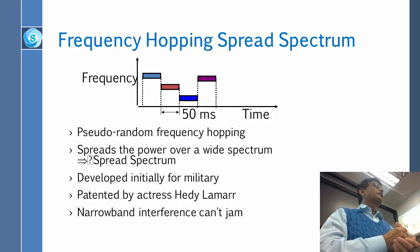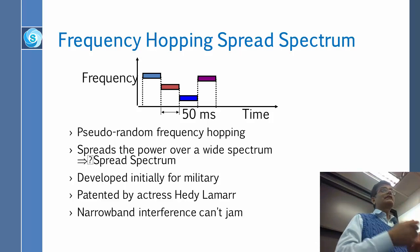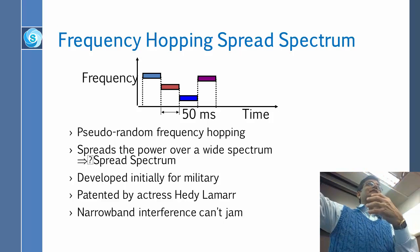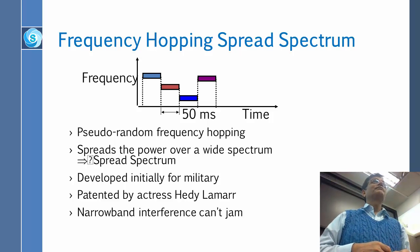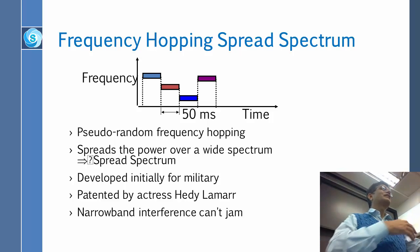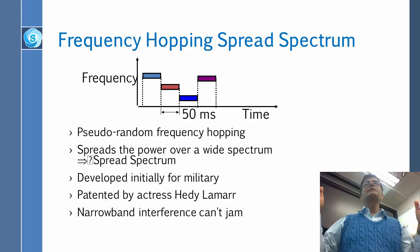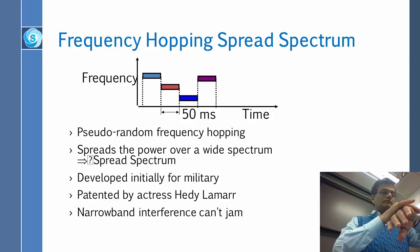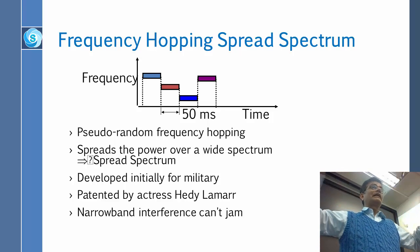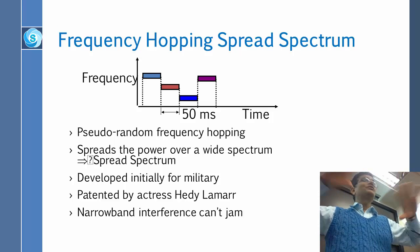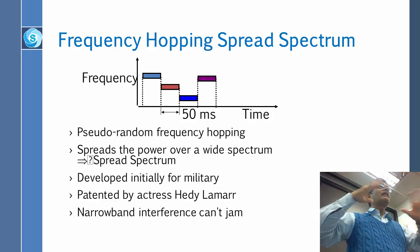This random number generator is your code. In the random number generator, you put a seed and the next number comes out; you put that and you get the next number. The seed is your code. If you put a different seed, you get a different sequence; I put a different seed, I get a different sequence. So basically, we all have a different code — that means a different seed — but we all know the same random number generator. Therefore, we can all talk at the same time in the same room.